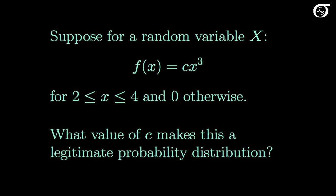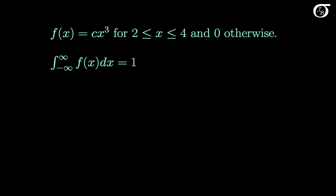What value of c makes this a legitimate probability distribution? In order for this to be a legitimate probability distribution, two conditions must be satisfied. First, it can never take on negative values. Here we have c times x cubed between 2 and 4, and x cubed only takes on positive values there. So we know that c cannot be negative, otherwise f would be negative sometimes, and that's simply not allowed.